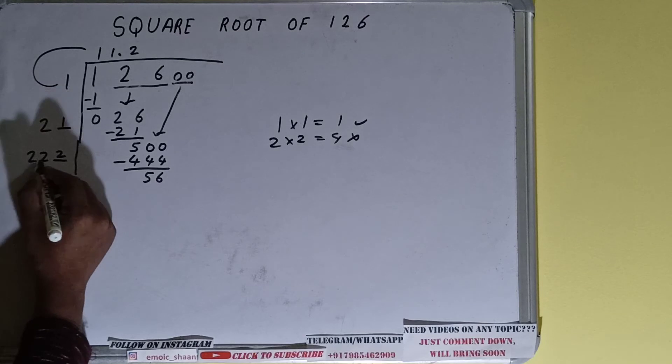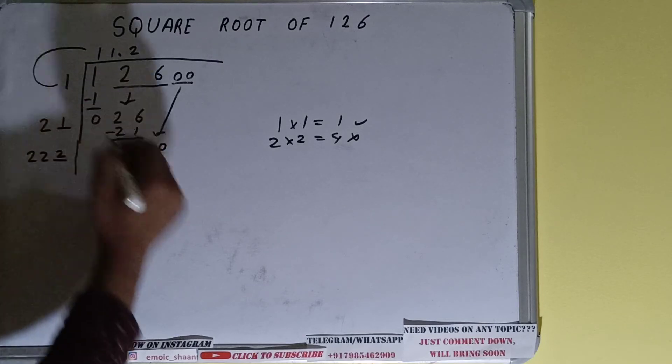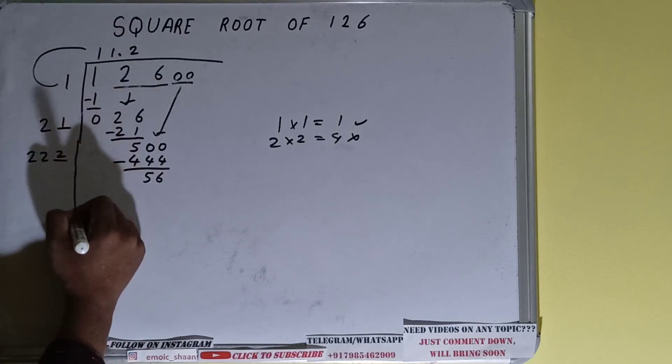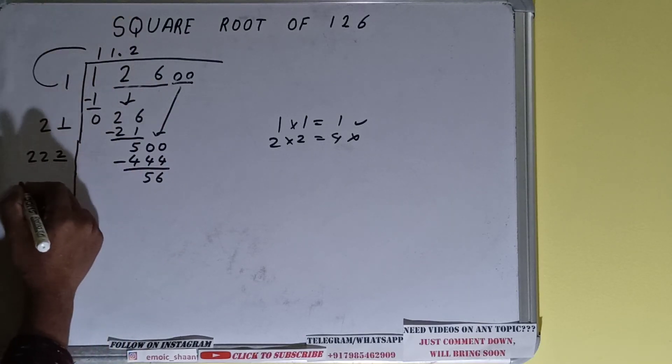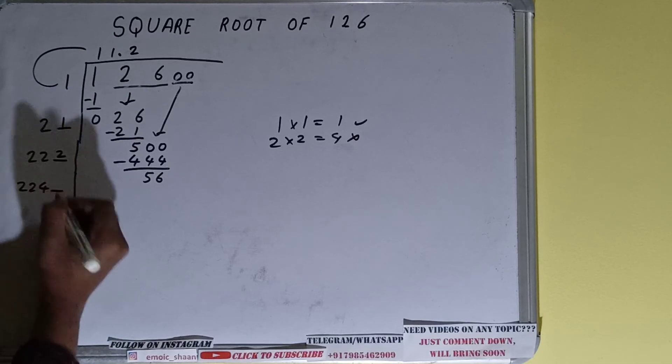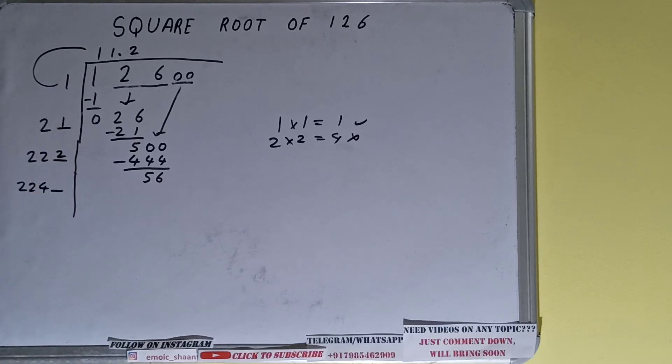We did two into two, so add both: 222 plus two will be 224, and one digit extra.